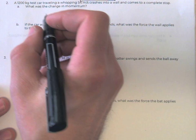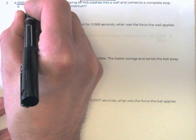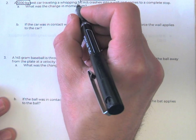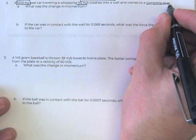Alright, let's take a look at this other one. A 1200 kilogram test car, 54 meters per second, comes to a complete stop.